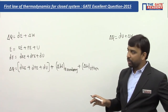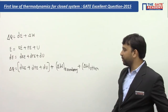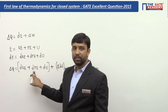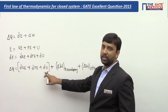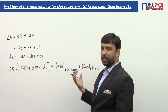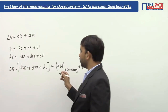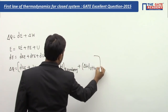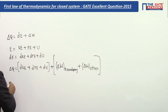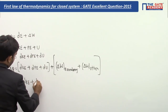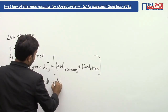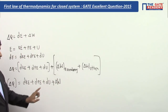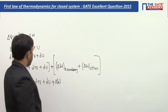Looking at this question: there is a change in elevation, so there is a change in potential energy; there is a change in velocity, so there is a change in kinetic energy; and there is a change in temperature, which causes a change in internal energy. The question asks for the net work done on the system — that is, the total work interaction happening in the process. So we write: delta Q = change in KE + change in PE + change in internal energy + delta W.